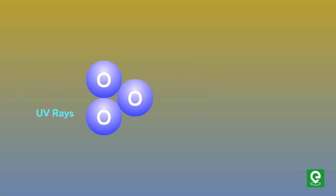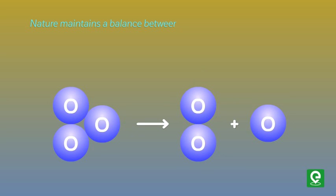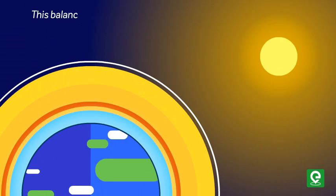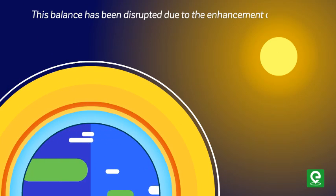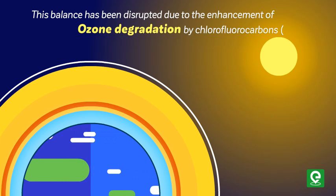Nature maintains a balance between the production and the degradation of ozone in the stratosphere, but this balance has been disrupted due to the enhancement of ozone degradation by chlorofluorocarbons or CFCs.